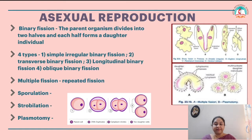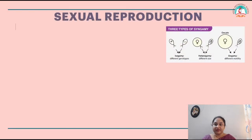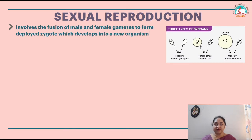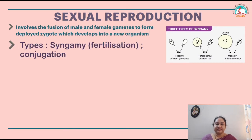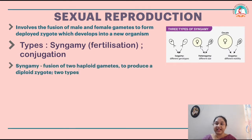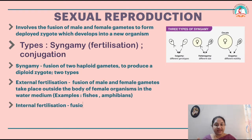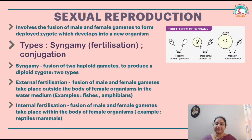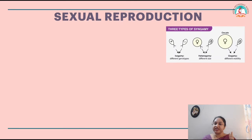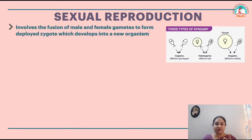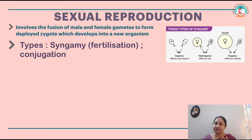Under multiple fission, we have repeated fission and also sporulation, strobilation, and plasmotomy in asexual reproduction. Moving on to sexual reproduction, it involves the fusion of male and female gametes to form a zygote which develops into a new organism. Two types of sexual reproduction are syngamy, also called fertilization, and conjugation.